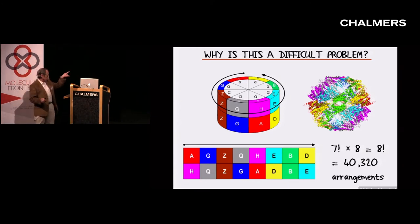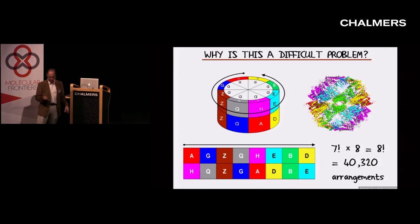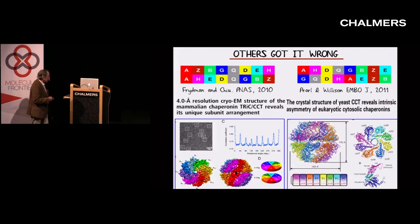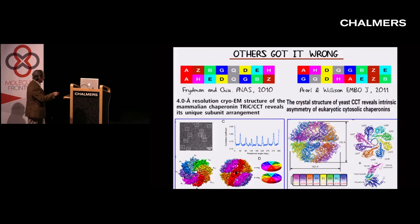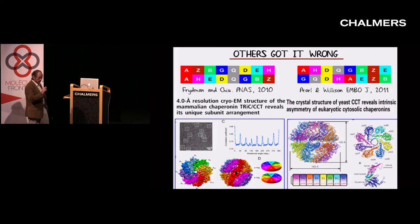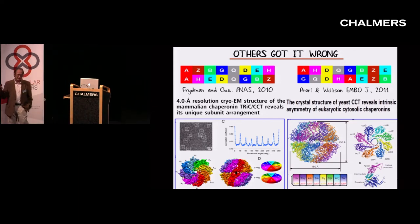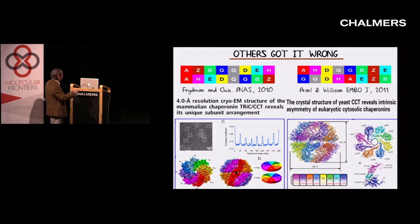So there are 40,000 ways of putting the colors on an object like this. Another reason you can say it's hard is that very competent groups got it wrong. Firstly there was a paper in 2010 by Latke, Friedman, and Chu — usually when things are wrong I only mention the names of the senior authors. Latke, Friedman, and Chu got it wrong in a paper in PNAS.